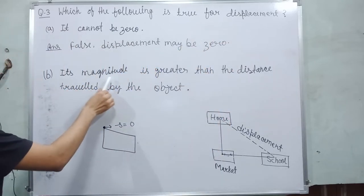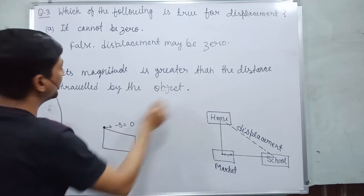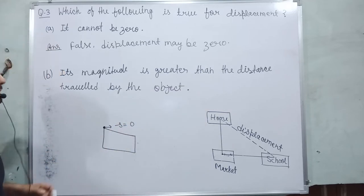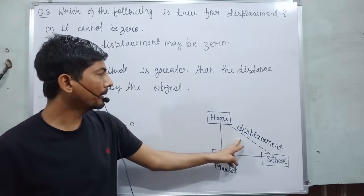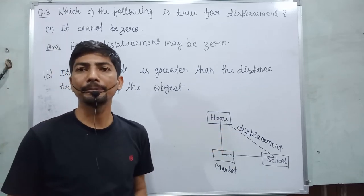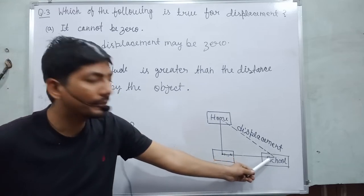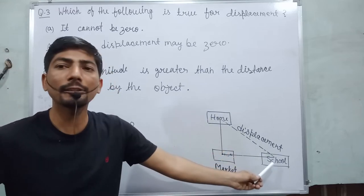And after that, its magnitude is greater than the distance traveled by the object. In this case, the magnitude of displacement is never greater than distance. This is larger distance. And displacement is shorter.